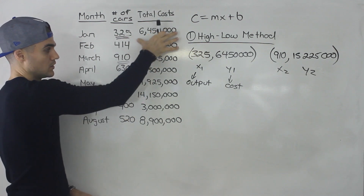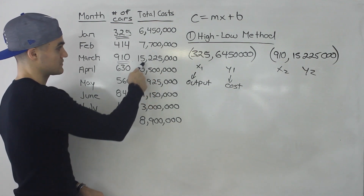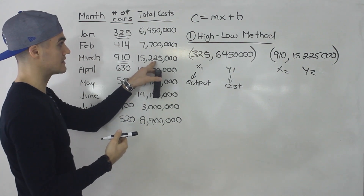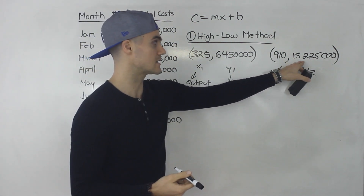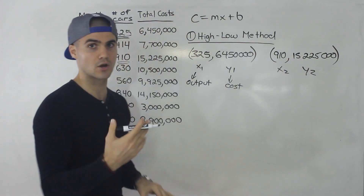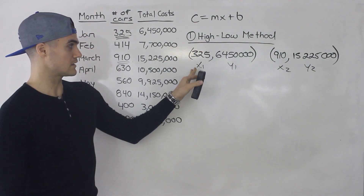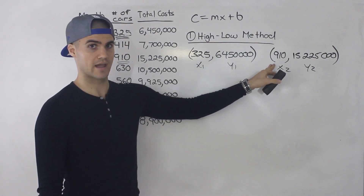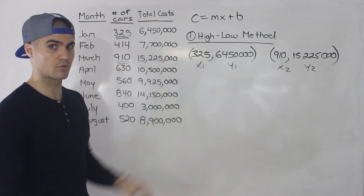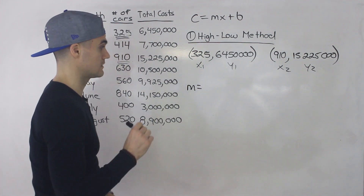We only looked at the output column. Sometimes the highest cost will correspond to the highest output — that was the case here with 15,225,000 — but that's just coincidence. It does make sense but isn't always going to happen. So when getting these two points with the high-low method, you're always getting the lowest x value and the highest x value — the lowest output and the highest output. Once you have these two points, it's easy: follow the same steps as before.